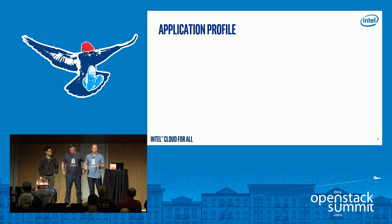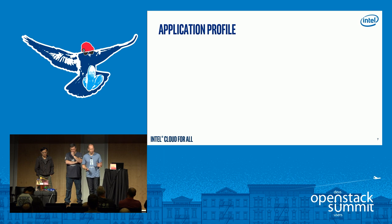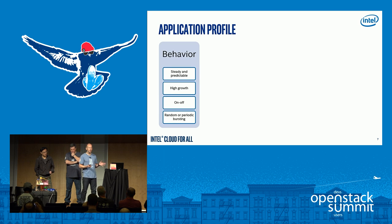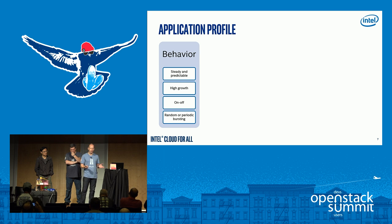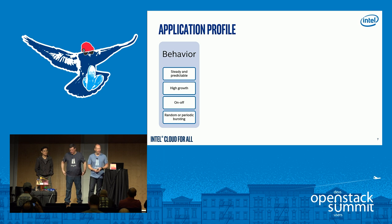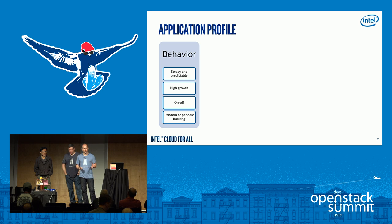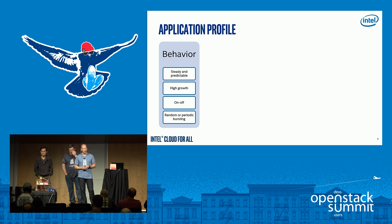Now let's look at the application profile. There are some things very common to cloud applications, but a few things that are a little different with IoT. Behavior that is steady and predictable is great — but not all IoT is like that. Looking at growth and projection: IoT devices are sometimes so simple to deploy that high growth is a real potential within your environment, and you really need to plan for that.